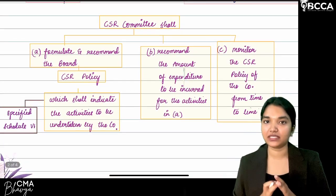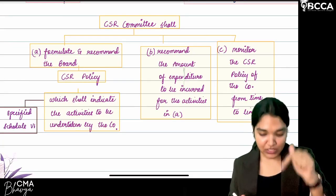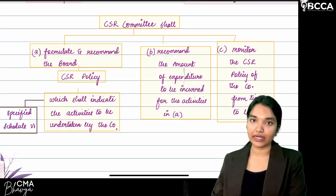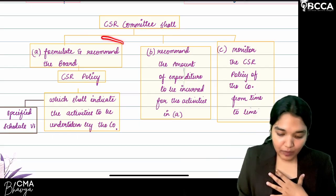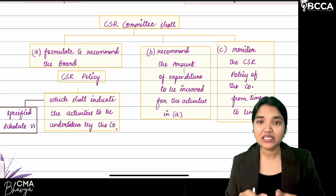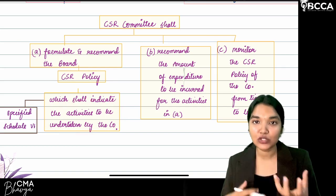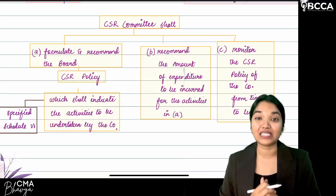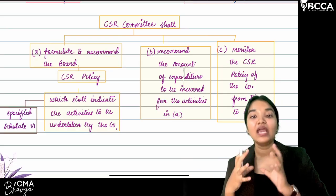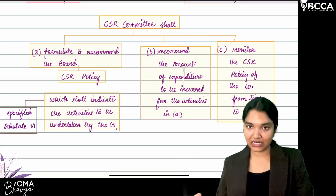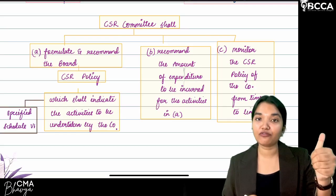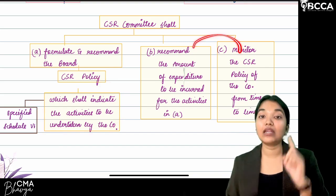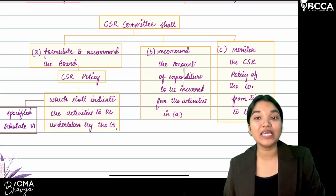The CSR committee's first responsibility is to formulate and recommend the CSR policy to the board of directors, who will then approve it. The CSR policy includes what activities the company will conduct as corporate social responsibility towards society and the environment. Activities can be chosen from Schedule 7 of the Companies Act — similar to Schedule 3 for financial statements. The committee also recommends how much expenditure to incur and monitors whether the CSR policy is being implemented.